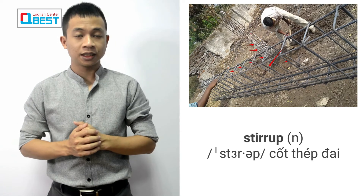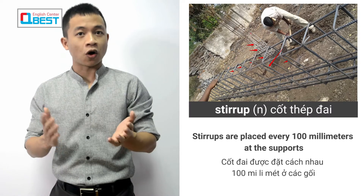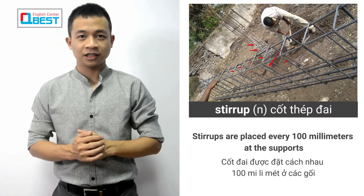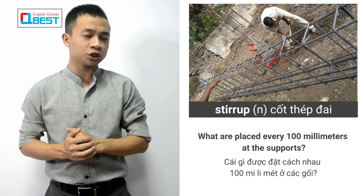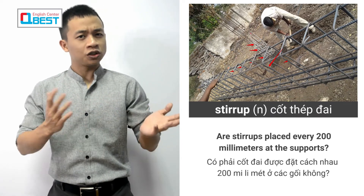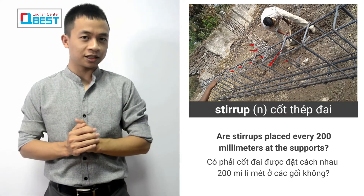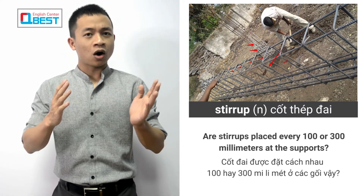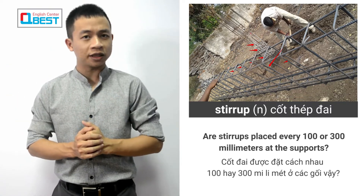Stirrup. Stirrups are placed every 100 millimeters at the support. What are placed every 100 millimeters at the support? Stirrups. Are stirrups placed every 100 or 300 millimeters at the support? No, not 200 millimeters. So are stirrups placed every 100 millimeters at the support?